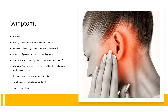Symptoms of otitis externa can include: ear pain; itching and irritation in and around your ear canal; redness and swelling of your outer ear and ear canal; a feeling of pressure and fullness inside your ear; scaly skin in and around your ear canal, which may peel off; discharge from your ear, which can be either thin and watery or thick and pus-like; tenderness when you move your ear or jaw; swollen and sore glands in your throat; some hearing loss. Usually only one ear is affected.